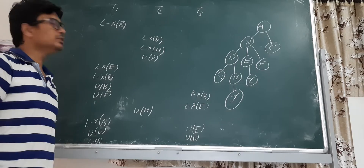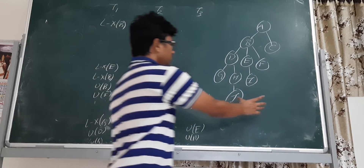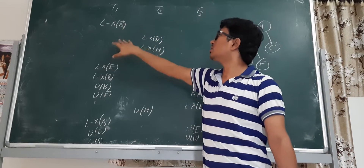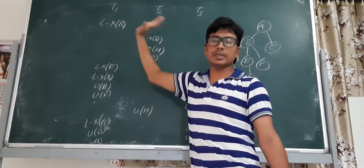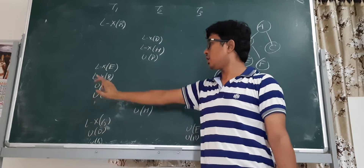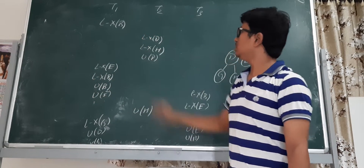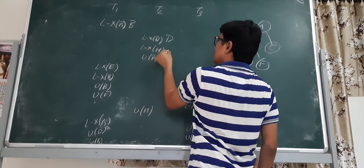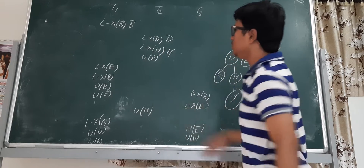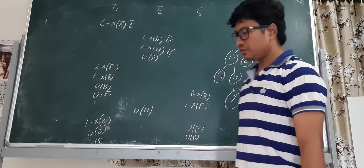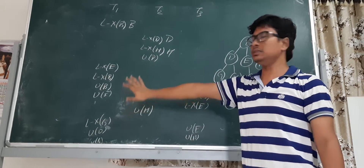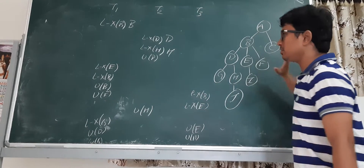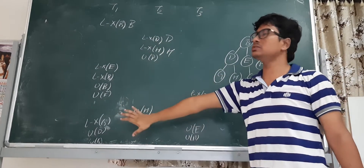Let me give an example for the graph based protocol. I have taken a graph or tree with three transactions and various locks. L represents an exclusive lock — only exclusive locks are allowed. U represents an unlock. This is an exclusive lock on D, this is on D, this is H, and U D means unlock D. First we will check whether each transaction is following the graph based order or not.